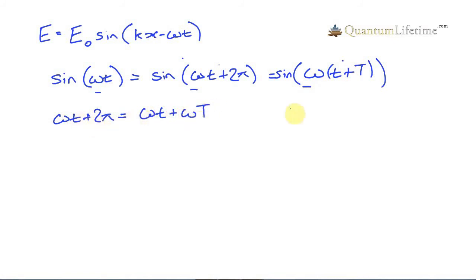And we can see from this that omega capital T equals 2 pi, which means that omega equals 1 divided by the period times 2 pi.